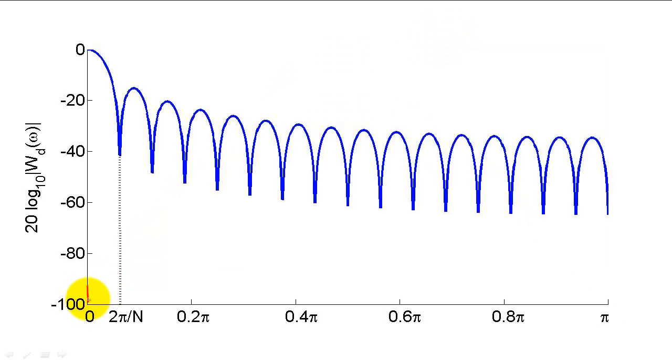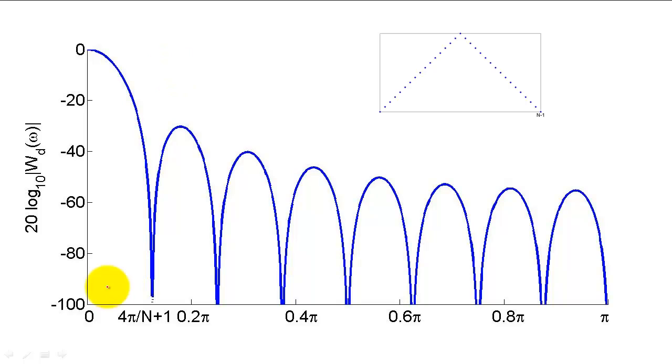For the sake of comparison, let's remember that the main lobe and side lobes of the rectangular window looked like this. Now, the main lobe and side lobe of the triangular window would look like this. As you can see, the height of the side lobes shrunk considerably, but the width of the main lobe widened.